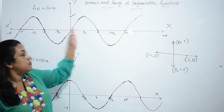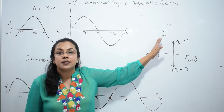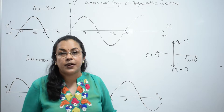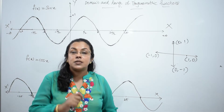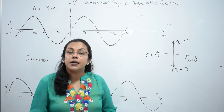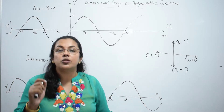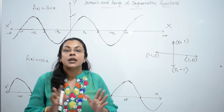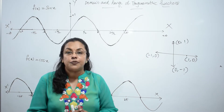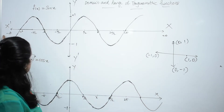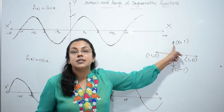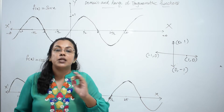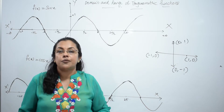The graph of the sin function will look like this. Now, what about the domain and range of the sin function? Domain is nothing but the input — those values of x for which the function is defined. It is clear from the graph that the domain is from minus infinity to plus infinity. The function is defined for all values of x.